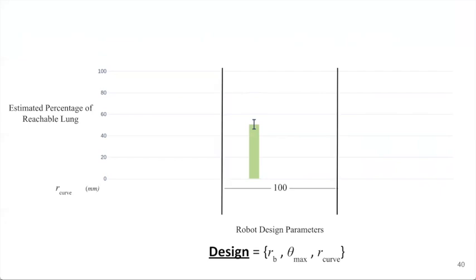We'll compare radius of curvature, maximum piercing exit angle, and bronchoscope radius. For example, for the design consisting of a 100 millimeter radius of curvature needle, 30 degrees maximum exit angle, and 1.5 millimeter radius bronchoscope, we're able to reach approximately 50 percent of the lung on average.